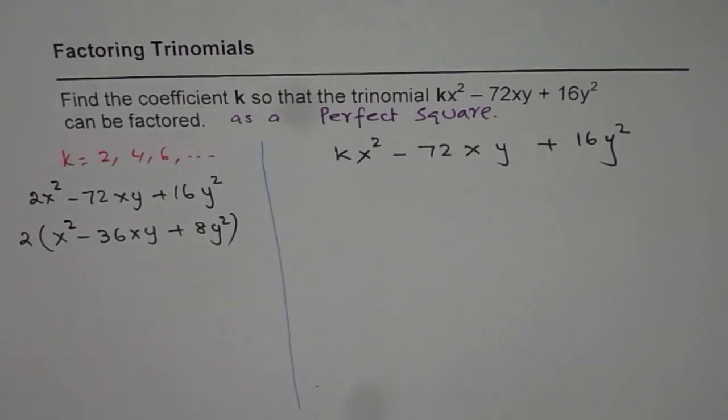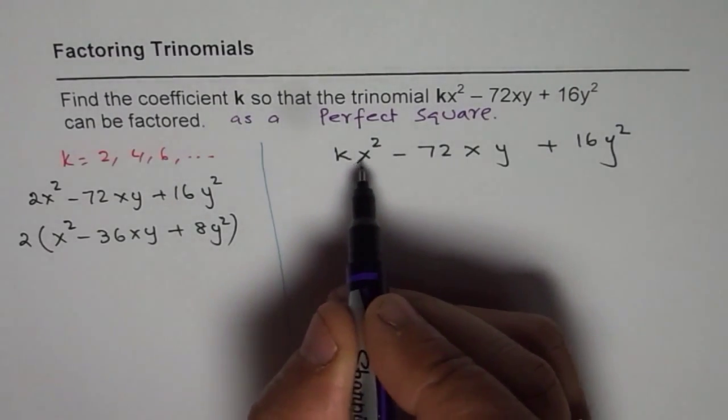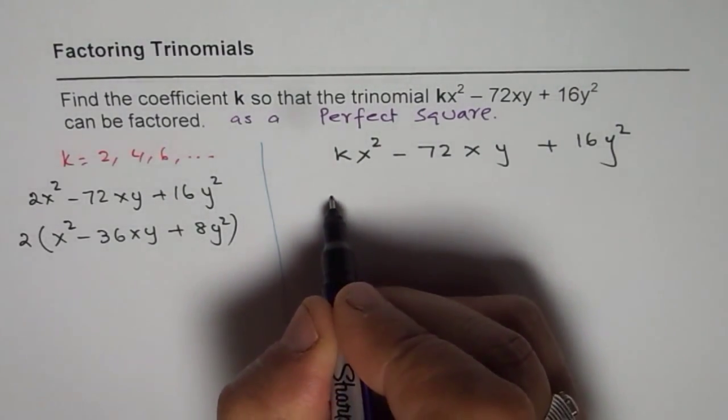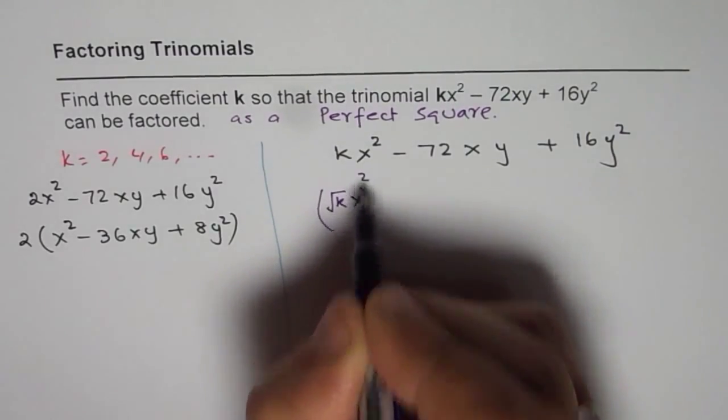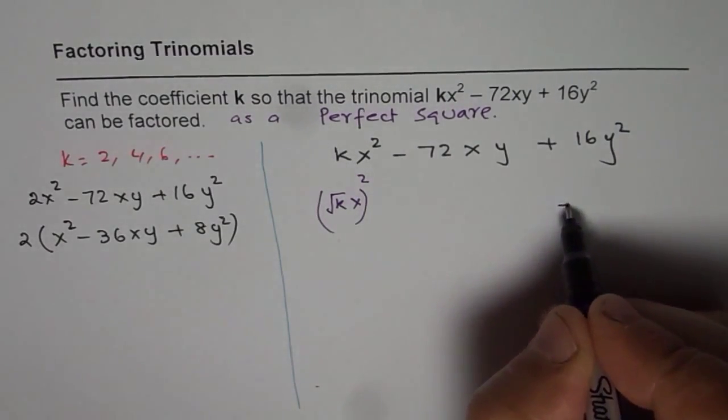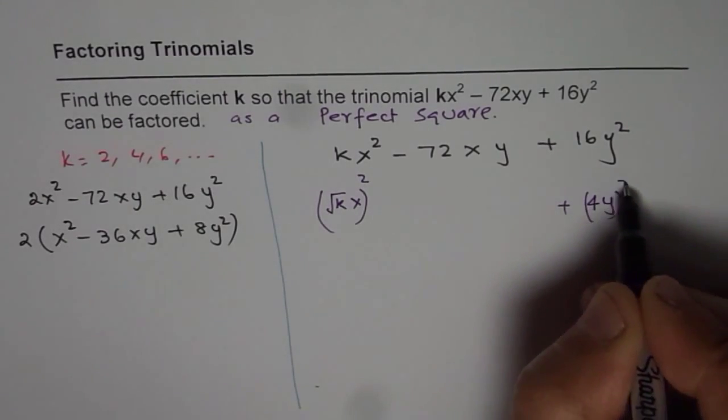Space it out so that you get room to do your calculations. Now, when we say perfect square, that means we want this number to be a square of something. So we have (√k·x)². That number should also be a perfect square of something. This is (4y)².